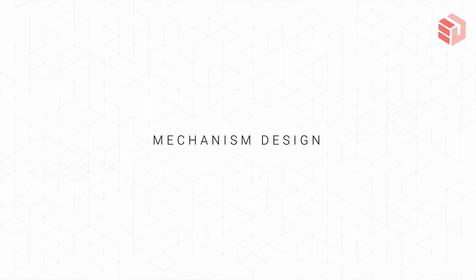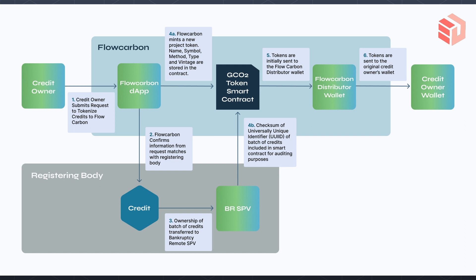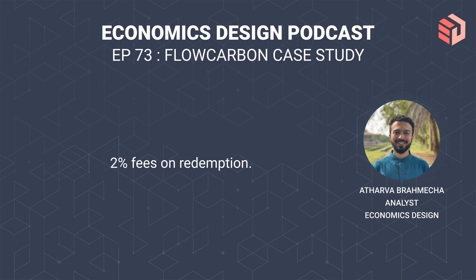The credit tokenization mechanism on FlowCarbon works as follows: the credit owner registers on FlowCarbon, which confirms the information with the registry. The registry transfers ownership to the special purpose vehicle. The FlowCarbon dApp will then issue GCO2 tokens, which are project-specific tokens that represent the underlying credit. Eventually these tokens are sent to the FlowCarbon distributor wallet and then sent to the credit owner's wallet.